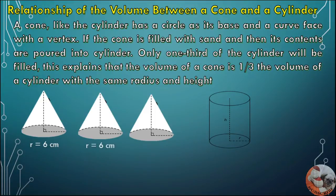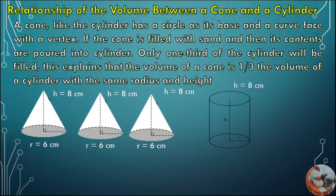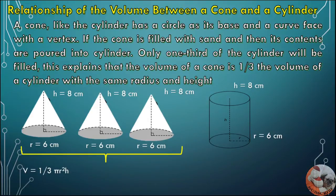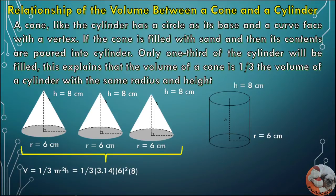Let's say the radius of the cone is 6 centimeters and the height is 8 centimeters. The height of the cylinder is 8 centimeters and the radius is also 6 centimeters. Finding the volume of the cone, we use the formula V = 1/3 × π × r² × h. So it equals 1/3 × 3.14 × 6² × 8. The volume of one cone equals 301.44 cubic centimeters.